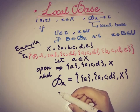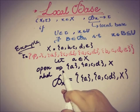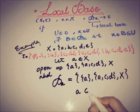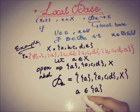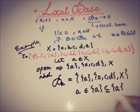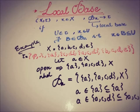This Bx, or Ba, is a local base at point a. Since a is an element of the open neighborhood {a} and is a subset of it; a is also a member of {a, c, d} and it is a subset of {a, c, d}; and a is also a member of X and X is a subset of X.